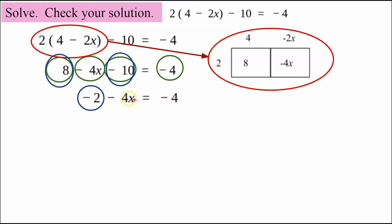So now that I have just a constant term and a variable term, I want to isolate this variable term, remembering that that is negative 4x. I want this all alone.